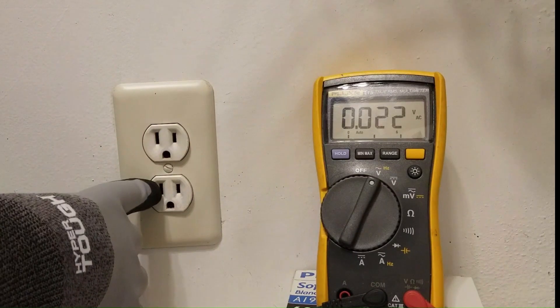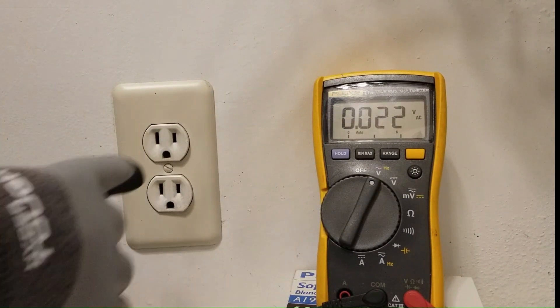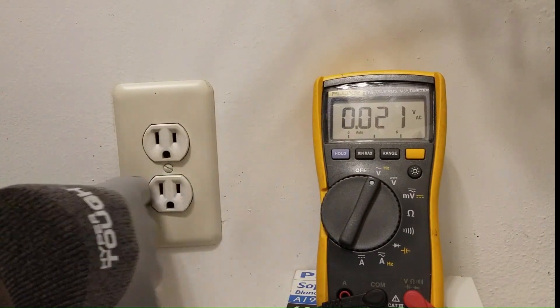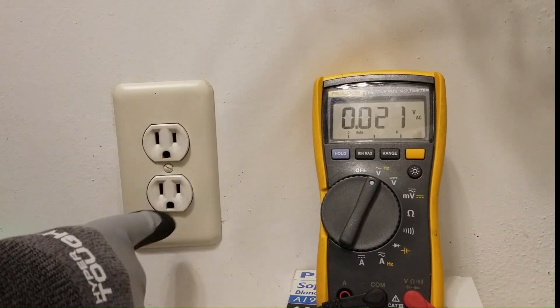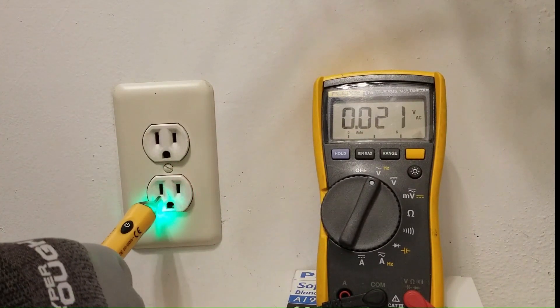What happens is when neutral floats and you put a load in here and you only have a couple of volts difference between the two, by definition neutral is going to be up close to 120 volts.